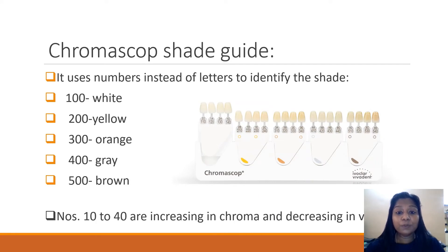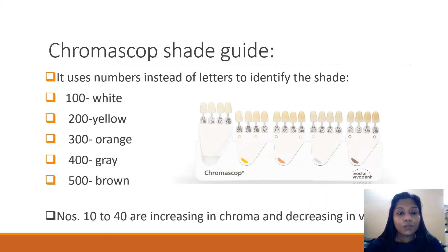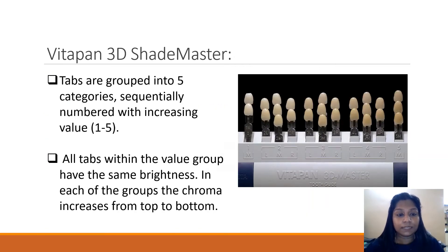In the Chromoscope Shade Guide, instead of letters, numbers from 100 to 500 are used. Each has subcategories from 10 to 40, which increase in chroma and decrease in value. The values are: 100 is white, 200 is yellow, 300 is orange shade, 400 is grey, and 500 is a brown shade.